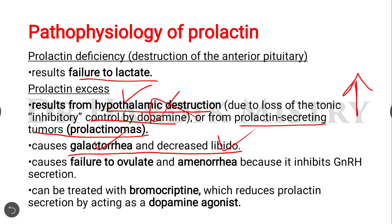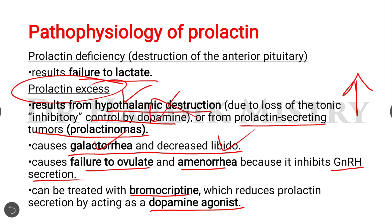Women with excess prolactin fail to ovulate and suffer from amenorrhea, because prolactin inhibits gonadotropin releasing hormone secretion from the hypothalamus. This can be treated with bromocriptine, which reduces prolactin secretion by acting as a dopamine agonist. Bromocriptine acts like dopamine and inhibits the anterior pituitary so there will be no further release of prolactin. This concludes the discussion on growth hormone and prolactin, both released from the anterior pituitary gland.